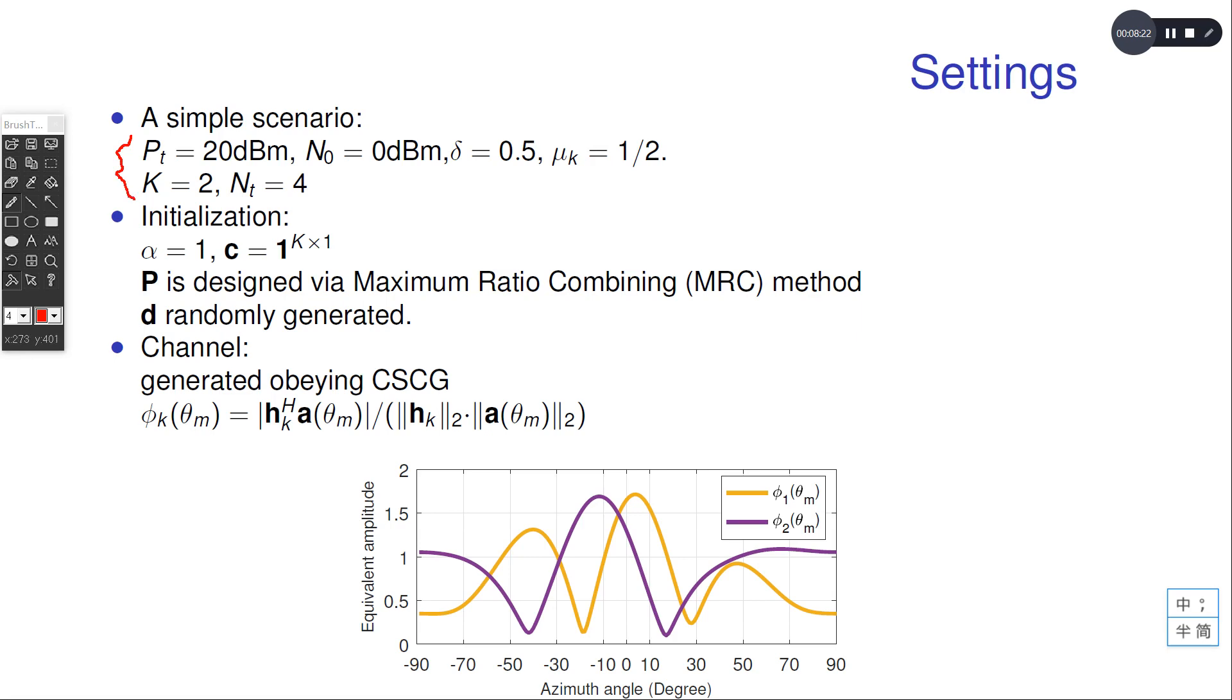We want to also specify the initialization problem here. The precoders P is designed via MRC method, and the dual variable D is randomly generated following the Gaussian distribution.